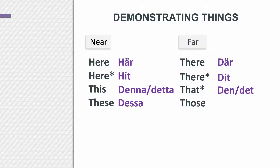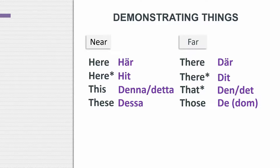To say 'those', that's very easy — it's dom. Dom is of course also 'they', and even 'them'. So to say those, they, and them, you say dom in all of those cases. In one way that's easier, because you only have to think about one word: dom.